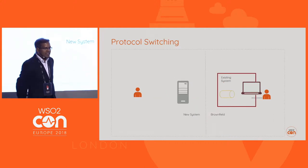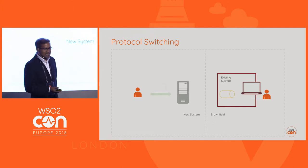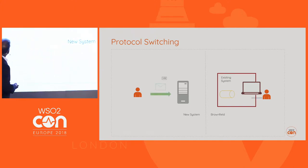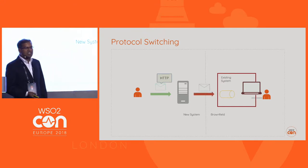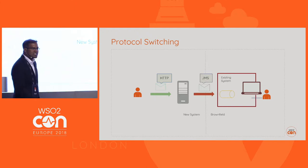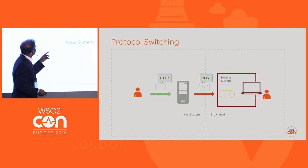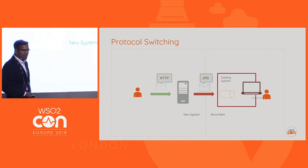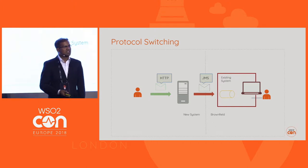And then we have the protocol switching requirement as well. In this example, we have a client sending a message based on HTTP protocol, and then we have the existing system which is based on JMS. So within the new system, we need to switch from the incoming HTTP protocol to JMS in order to talk to the brownfield system.